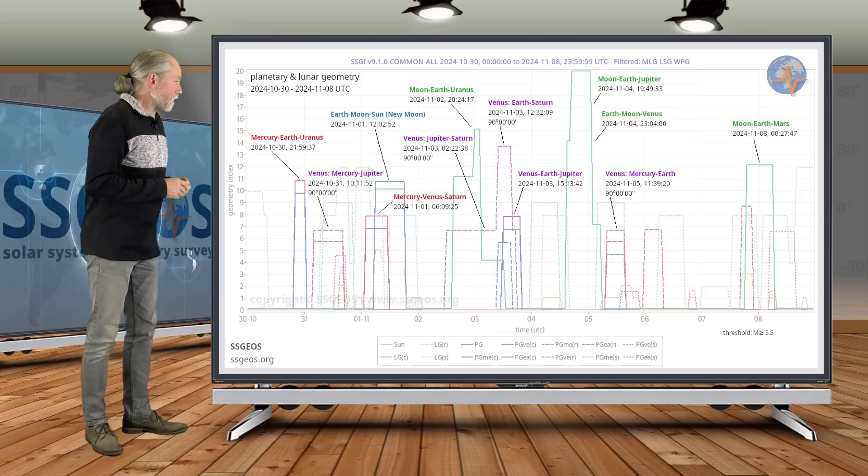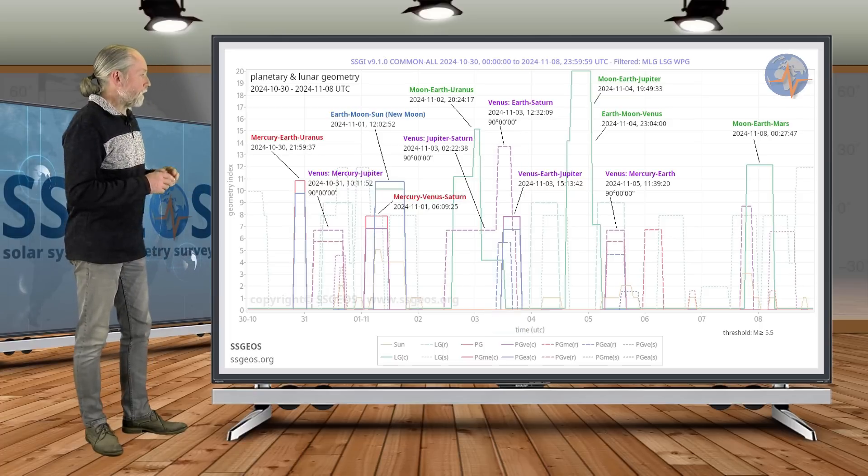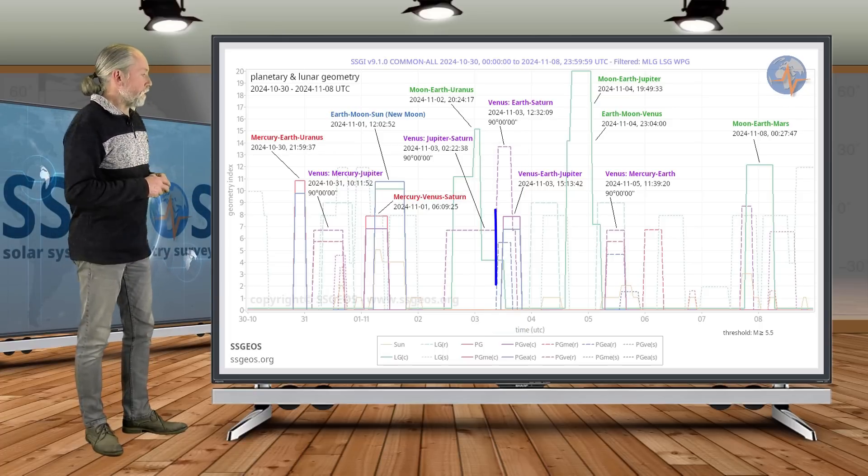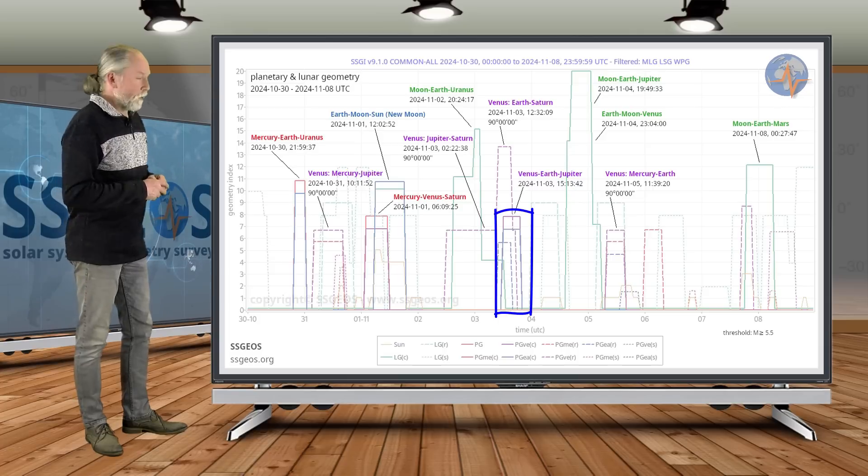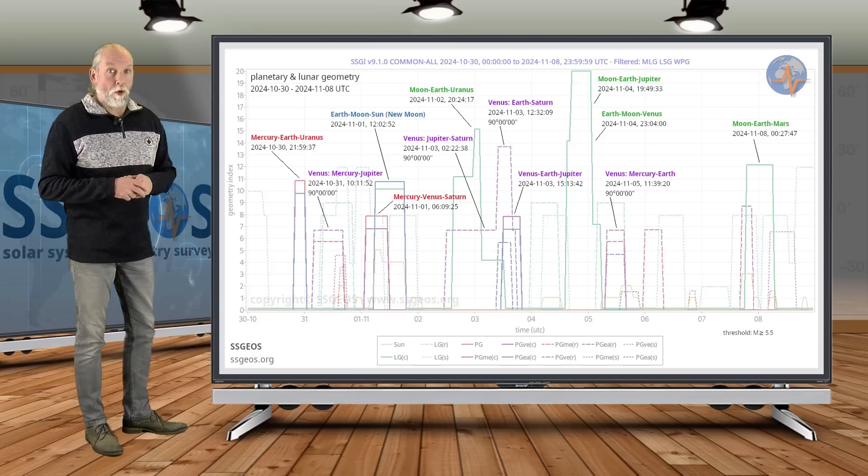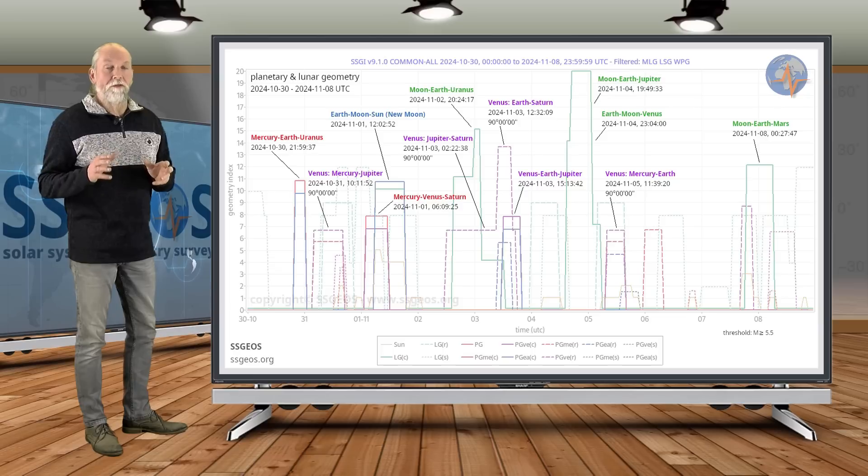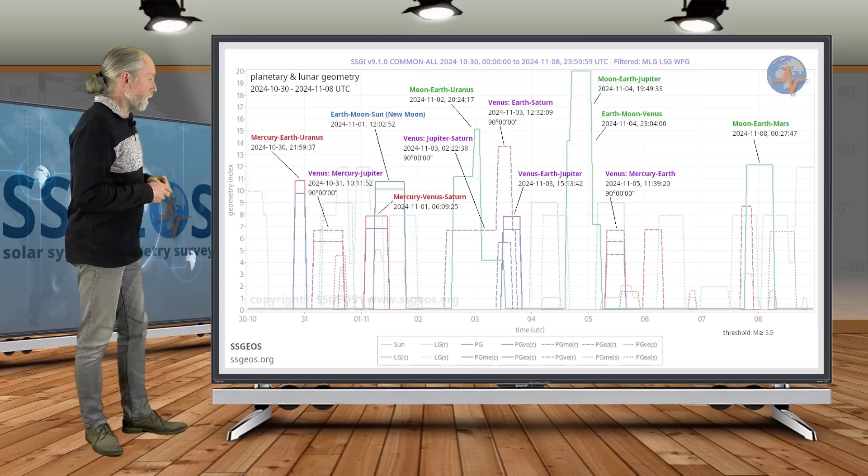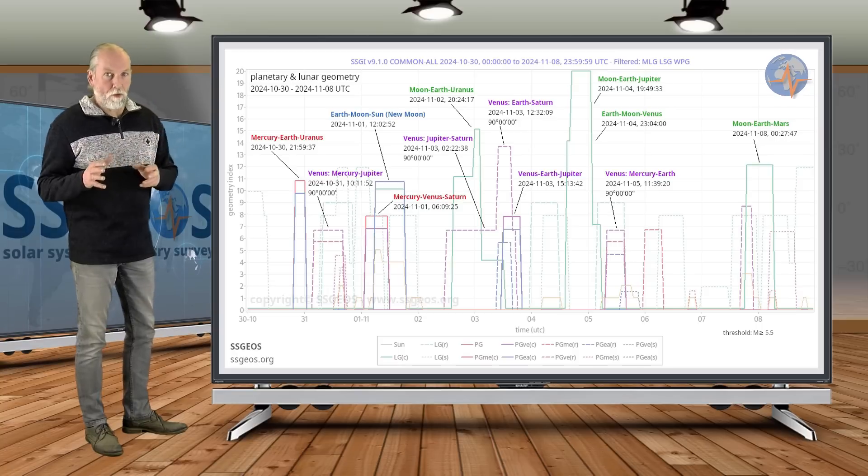Also Venus, Earth, Saturn in a right angle. That converges with the conjunction Venus, Earth, Jupiter. As a result we could see an obvious seismic response. I wouldn't be surprised if that would actually reach higher six to seven magnitudes. Again, around the 3rd or 4th.